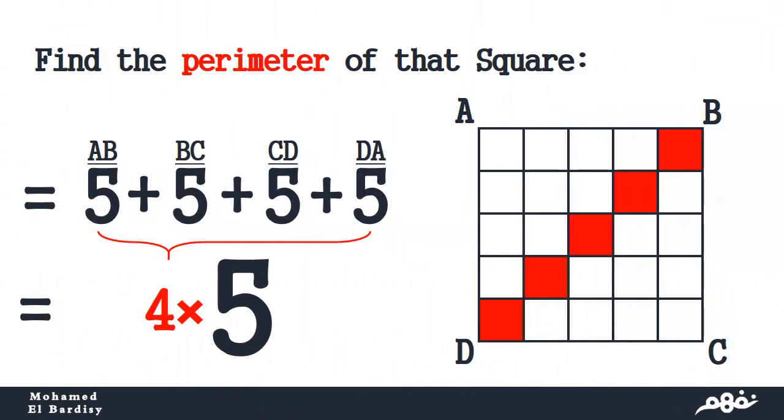If I asked you to find the perimeter of that square, we all know that any square has 4 sides: AB, BC, CD, DA and so on. And to find the perimeter you have to add the length of these 4 sides.